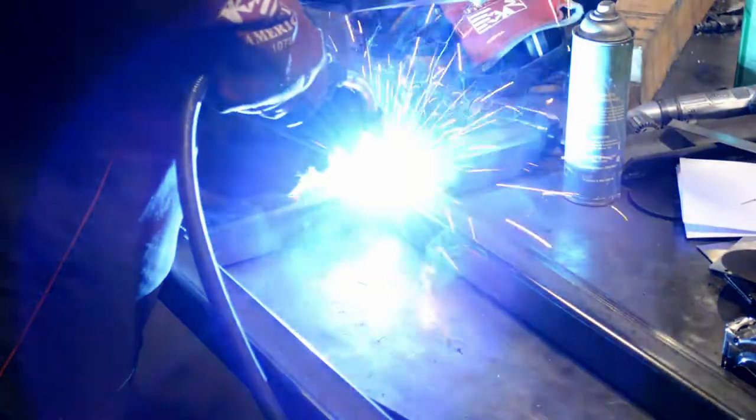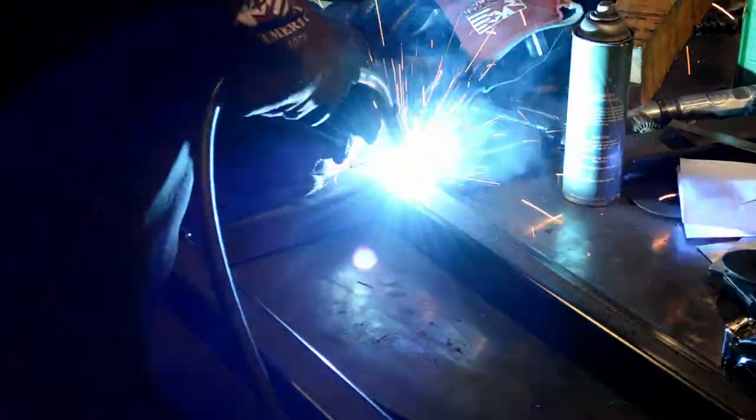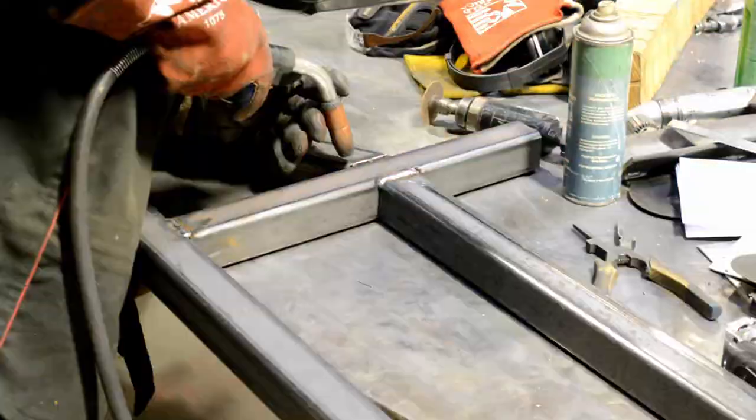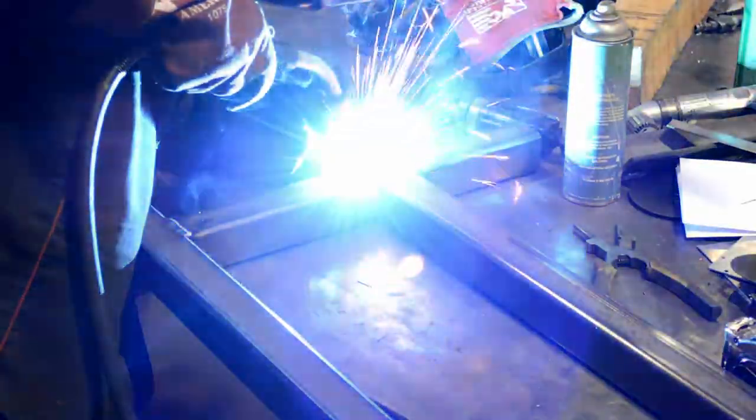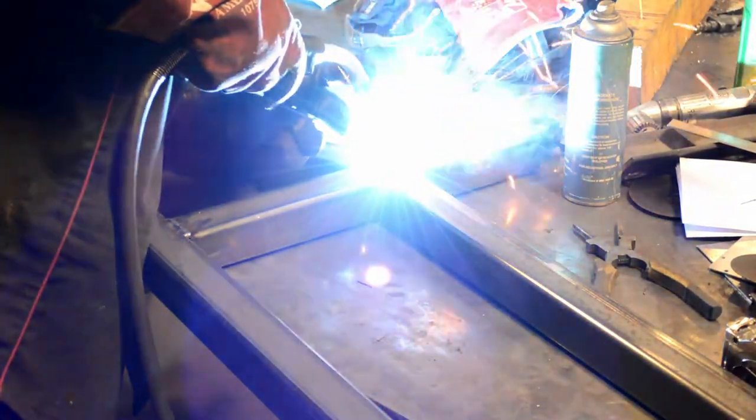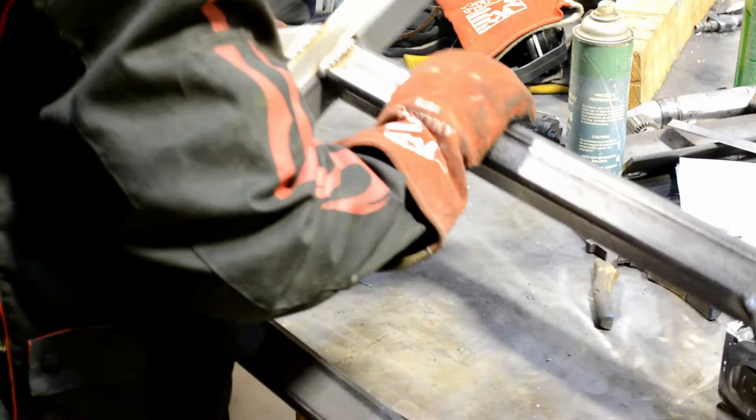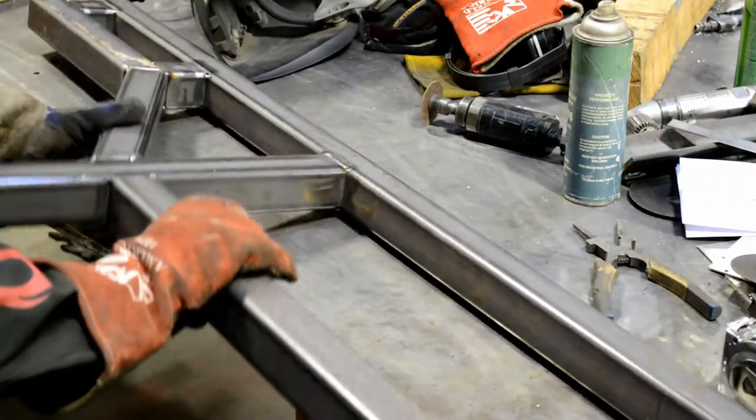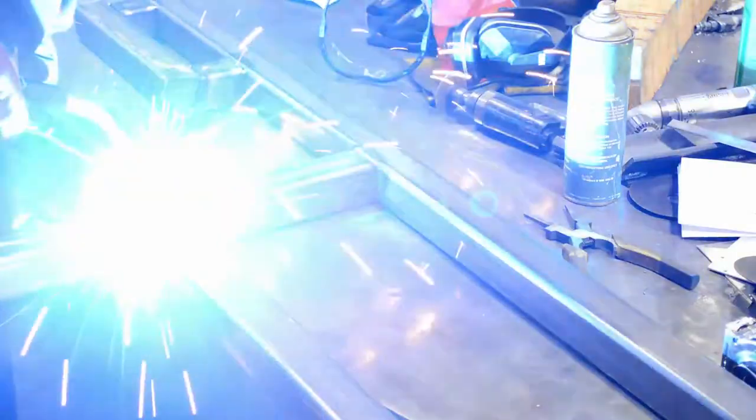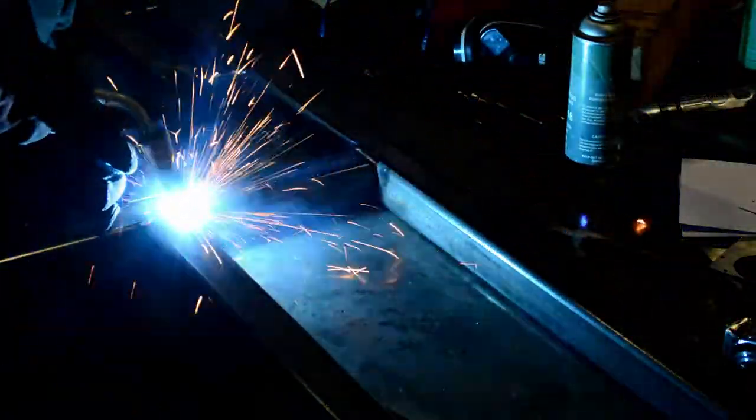And after all that tacking together, it was finally time to run some finished beads. So I got the MIG machine dialed in, definitely running the machine pretty hot just to be on the safe side. And I went one by one and just filled these seams where the box tubes meet. I'm definitely not showing all the welds because there are quite a few of them, but you get the idea. I kind of use just a zigzag pattern and get a nice fill on each piece.